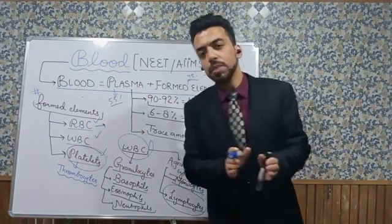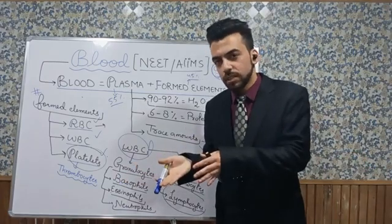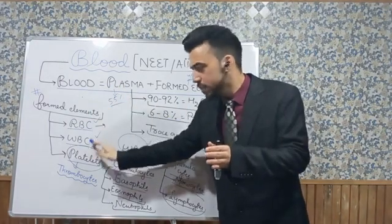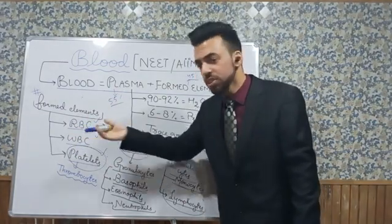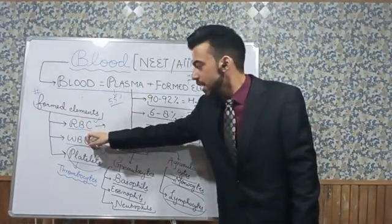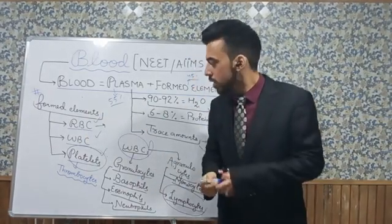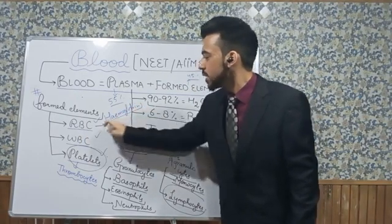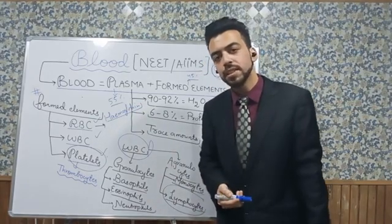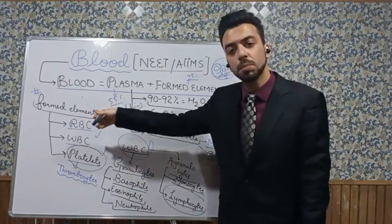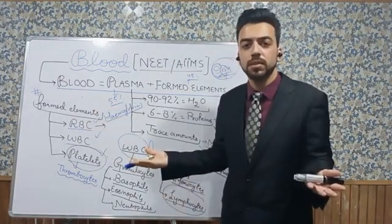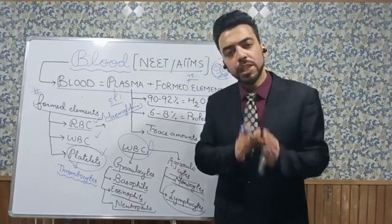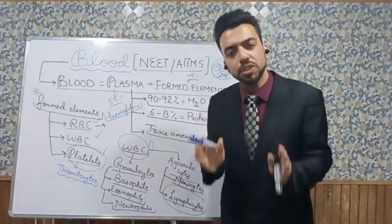Beginning with the RBC — red blood cells. They are red in color, and because RBC is the most numerous cell in blood and is red in color, that is why blood is red in color. RBC has the red color due to the presence of a pigment called hemoglobin. The RBC count is roughly about 5 million to 5.5 million per 1 mm³ of blood.